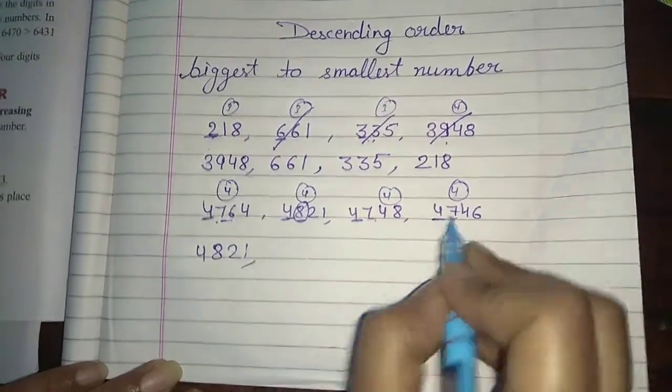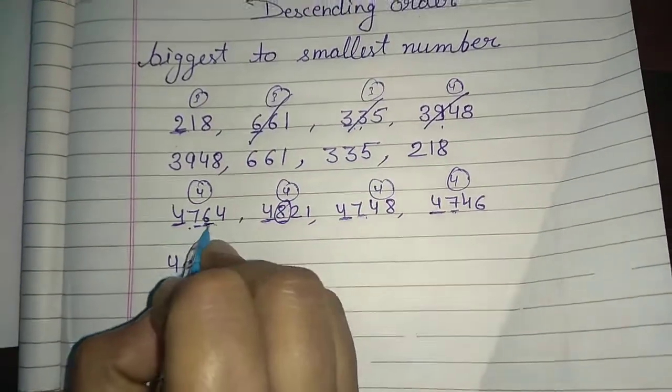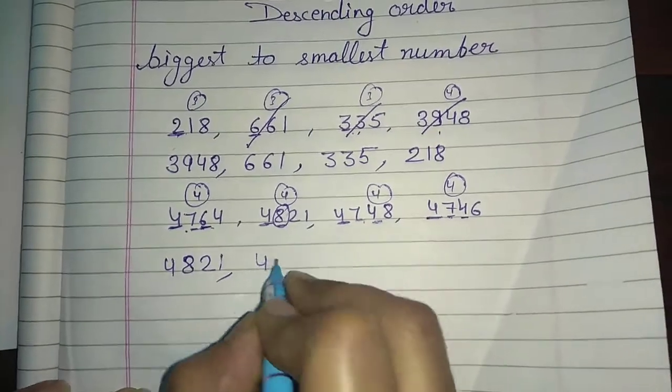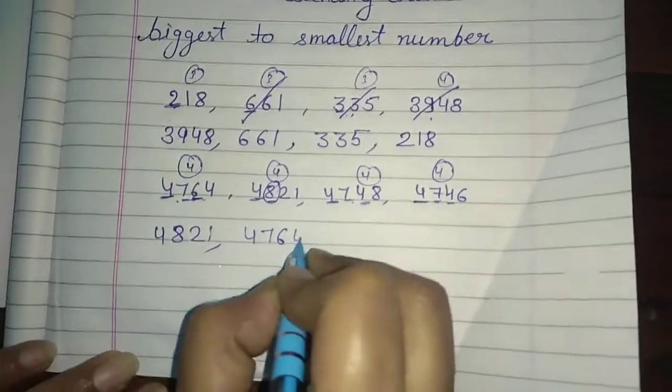Now seven, seven, seven, in all three same. So now what will we see? Tens. Six, four, and eight. So six is the biggest number. So six, four thousand seven hundred sixty-four.